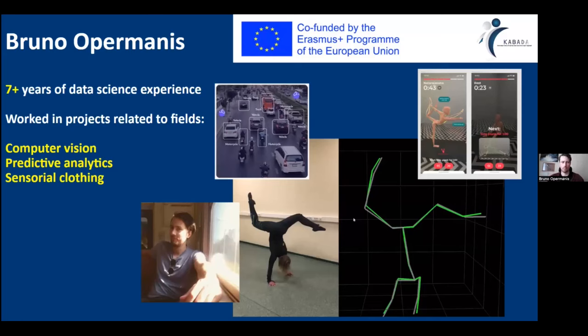A little bit about me. I have seven-plus years of experience in data science, mostly computer vision related to transportation information systems — tracking vehicles, number plates, real-time and so on. Predictive analytics, different kinds of fraud analytics and so on. Also sensorial clothing, where I work mostly with electronics and not so much with AI.